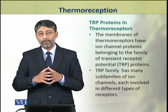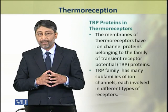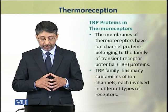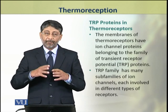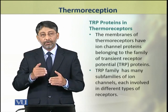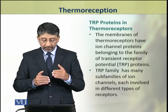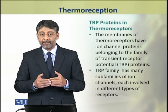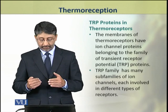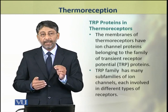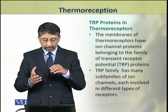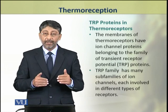In both types of thermoreceptors, specialized receptor proteins are present. These proteins are present in the membranes of thermoreceptors and belong to a family of ion channel proteins called TRP proteins — that is, transient receptor potential proteins. The TRP family is a very large family with many sub-families, each being a large group of receptors.